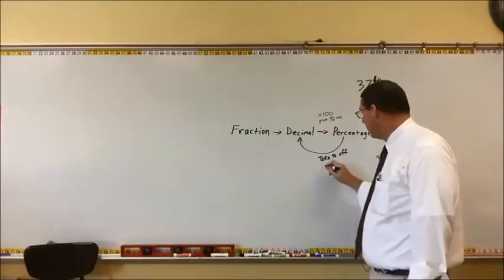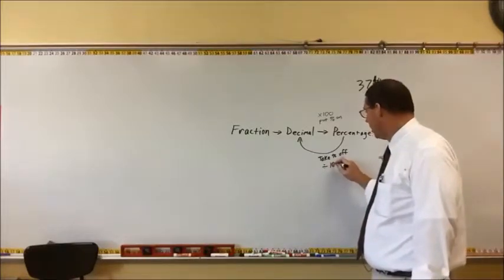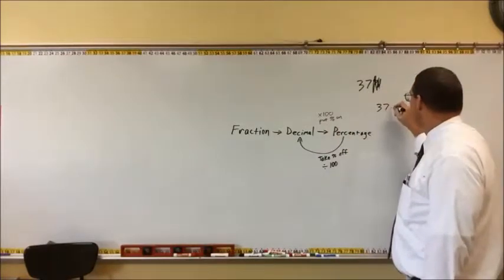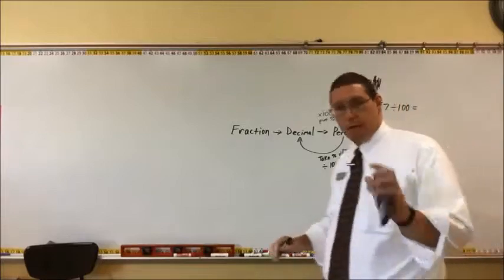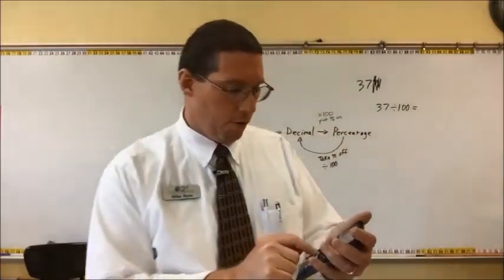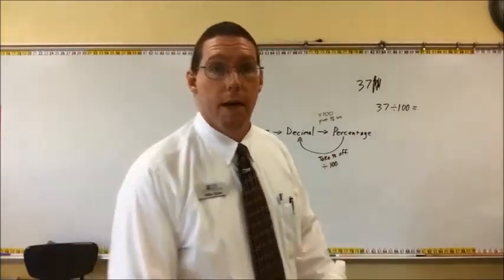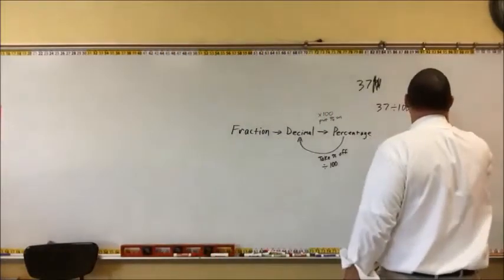And then divide by 100, which is the opposite of multiplying by 100. So 37 divided by 100, let me get my calculator, 37 divided by 100 gives me 0.37.